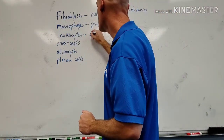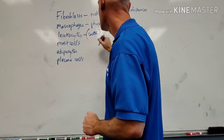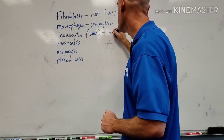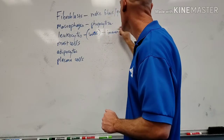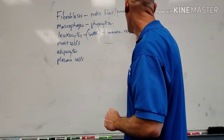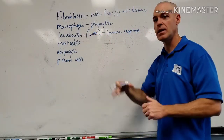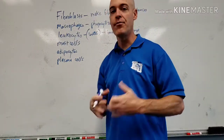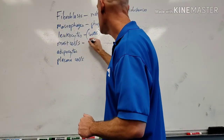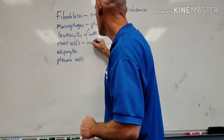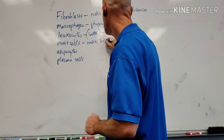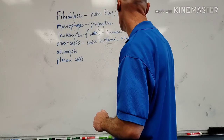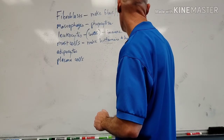Leukocytes are, of course, white blood cells. They are going to be part of your immune system — your immune response. White blood cells are always part of your immune system; they do the fighting. Mast cells are going to make something called histamine and heparin.